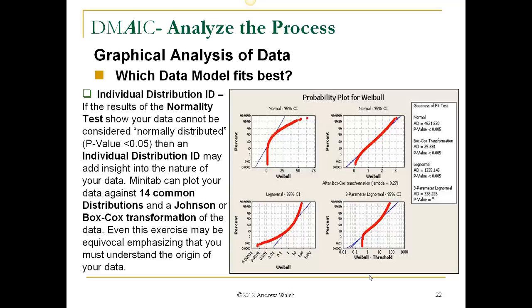Now, the individual distribution ID, if the results of the normality test show your data cannot be considered normally distributed, the p-value is less than .05, then an individual distribution ID may add insight into the very nature of your data. Minitab can plot your data against fourteen common distributions, including a Johnson or a Box-Cox transformation of the data. Even this exercise may be equivocal, emphasizing that you must understand the origin of your data. So, what that means is you may see more than one distribution match up fairly nicely to your data. So, which one is it? If you know the origin of your data, whether it's reliability data, time data, things like that, that can help eliminate one of them and hone you in on the right distribution to use.